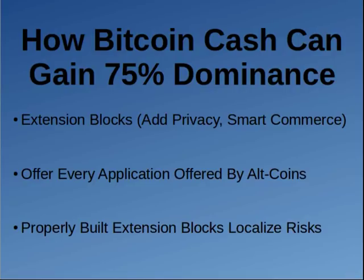Bitcoin Cash might actually be able to add every single privacy application and smart commerce application on the market for every single altcoin in existence. The reason why Bitcoin Cash can do this is because it has very big block sizes. With these massive block sizes, you can build as many extension blocks as you want, and each one completely localizes the risk of coins sent to those blocks.